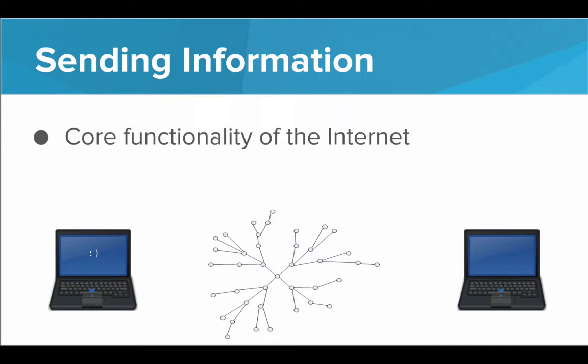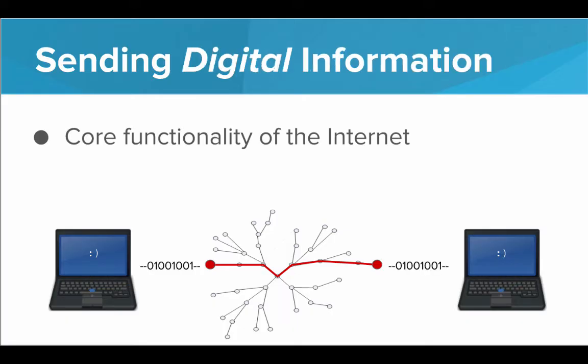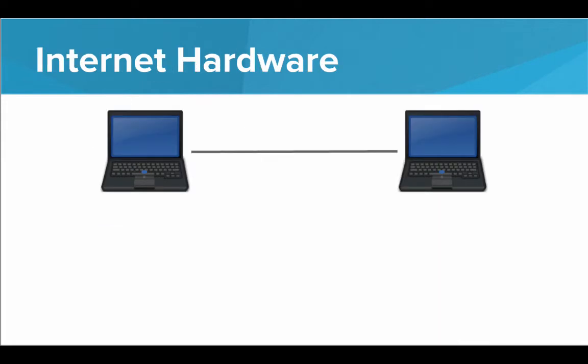So really what we're concerned with is sending information. That is the core functionality of the internet. We want to get this smiley face from the computer on the left all the way to the computer on the right. But what's actually happening? We're not sending a physical smiley face across the network. Instead, we're using the power of digital information, the power of encoding to represent any information we want to send as zeros and ones. At a symbolic level, the internet is really just a way to get zeros and ones from point A to point B. But at the physical level, how is that actually happening? How can we represent a zero and one inside the network? This is where the internet hardware comes in.